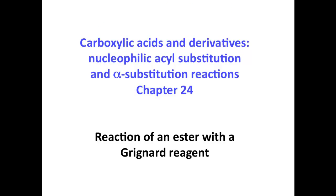We're going to discuss the reaction of an ester with a Grignard reagent. This is covered in the carboxylic acid and derivatives, nucleophilic acyl substitution and alpha substitution reactions chapter. The first thing we're going to look at is the reaction mechanism. Reaction of an ester with two equivalents of a Grignard reagent forms a tertiary alcohol. Here is the mechanism for that transformation.